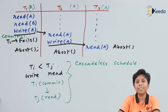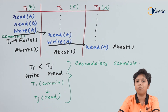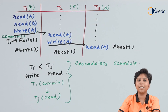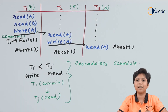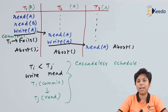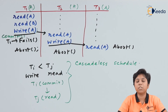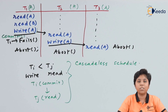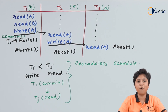A cascade-less schedule is one where the commit on the write operation happens before any transaction tries to read that value. Cascade-less schedules are always recoverable schedules, because any commit on Tj will happen after Ti's commit. However, recoverable schedules are not always cascade-less — but the vice versa is true. That is all for recoverability on transactions, thank you for watching.